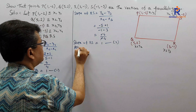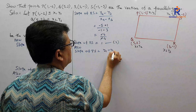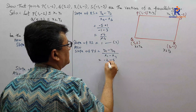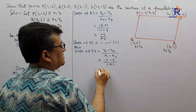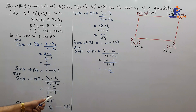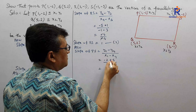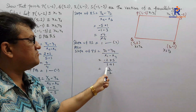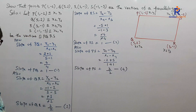Slope of PS = (y1 − y4) / (x1 − x4). y1 is −2, y4 is −5, x1 is 1, x4 is −1. That gives (−2 − (−5)) / (1 − (−1)). We have to be very careful: minus of minus becomes plus. So it's 3/2. Slope of PS = 3/2, equation number 4.